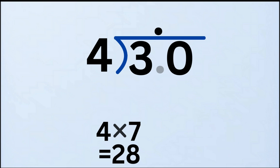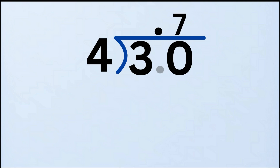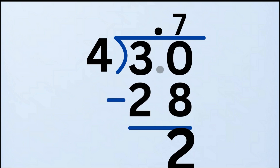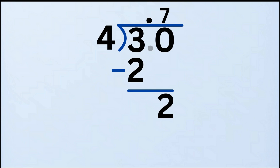So we write 7 in the quotient — that's the answer on top — right after the decimal point. 7 times 4 equals 28. Now we subtract: 30 minus 28 equals 2. We still have a remainder of 2, so we're not done yet.